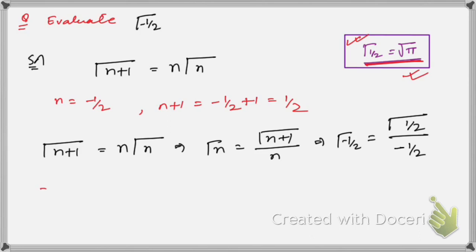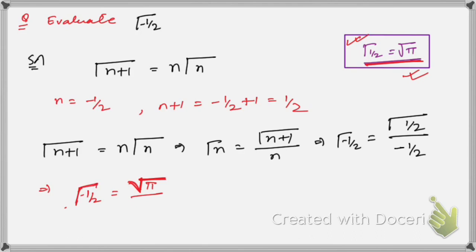So Γ(−1/2) = √π / (−1/2) = −2√π. This is our answer. For the time being, just remember that Γ(1/2) = √π.